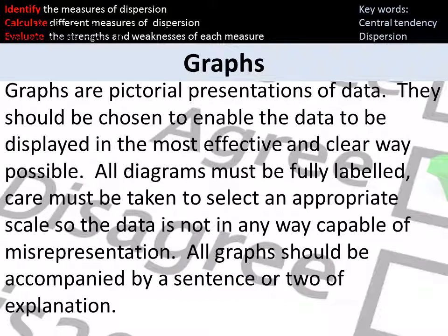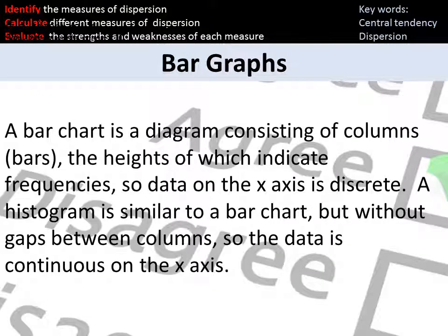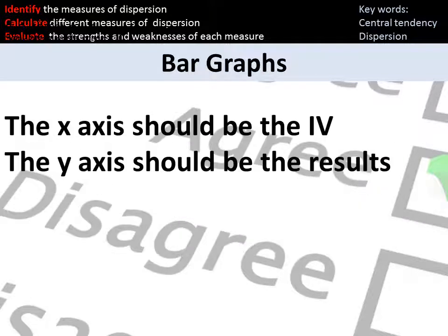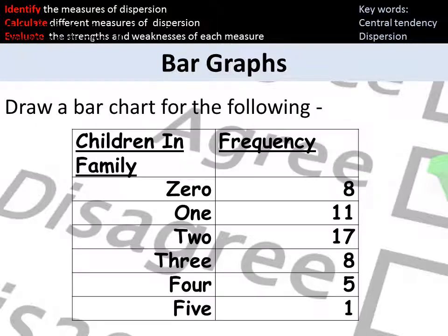Very quickly then, moving on to graphs. You need to be able, according to the spec, to display different bits of data within a graph. The one you need to do the most is a bar graph. And I'm sure you know what this is. This allows us to compare different columns of frequencies in order to be able to compare results. It's really important to remember here that when you're drawing your graph, your x-axis, and don't forget x is across. So, your x-axis is always the one that goes across the screen, should always represent the IV. So, whatever it is that's been manipulated within that study. And your y-axis should always be the result. If you want to have a practice at that, have a look at drawing a bar chart for the following information on the screen. If you just press pause, you can have a go.